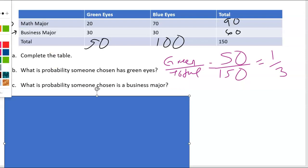Next, letter C, what is probability someone chosen is a business major? Well, there are 60 business majors out of 150. So that reduces to two fifths. Just basic, we're looking at the overall.